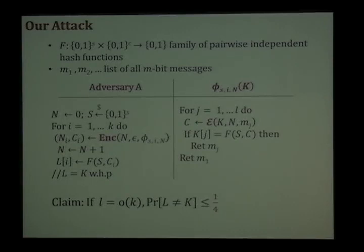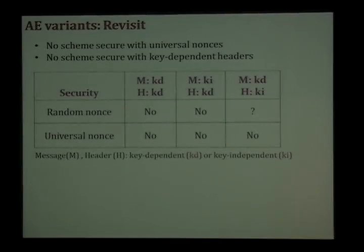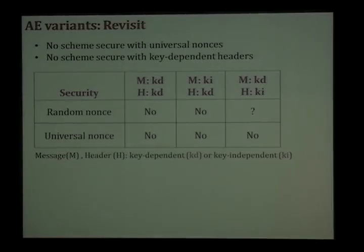Let's stop and see what we have done here. This attack is somewhat serious because we are not just distinguishing between B equal to 0 and B equal to 1 — we are actually recovering the key. This rules out the possibility of getting schemes that are secure with universal nonces. We have a similar attack in the paper that shows how in the presence of key-dependent headers it is not possible to get security, but I'll skip that in the interest of time. Going back to the table of variants: whenever we have universal nonces it's no longer possible to get security, and similarly whenever we have key-dependent headers. The most important takeaway is that standardized schemes require universal nonces and we can't get KDM security in these settings.